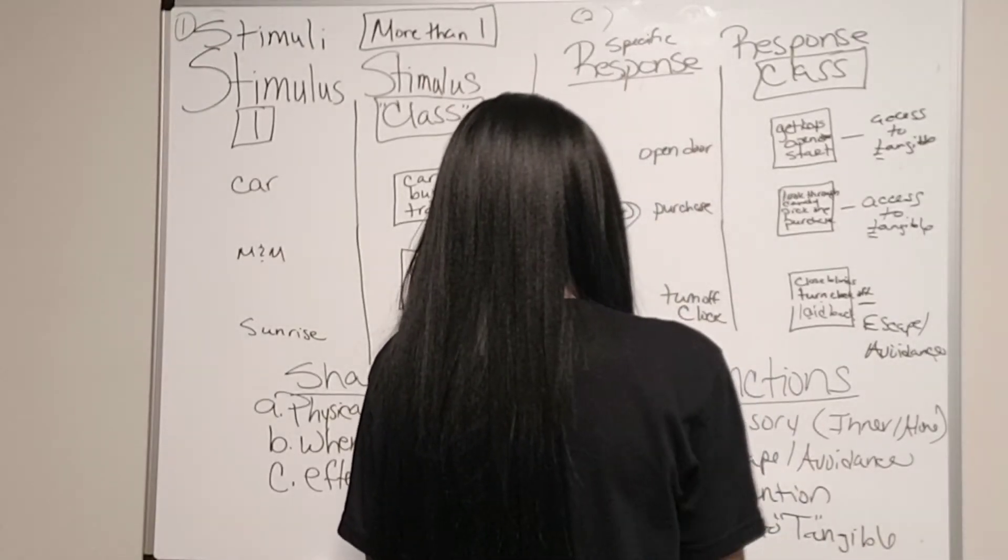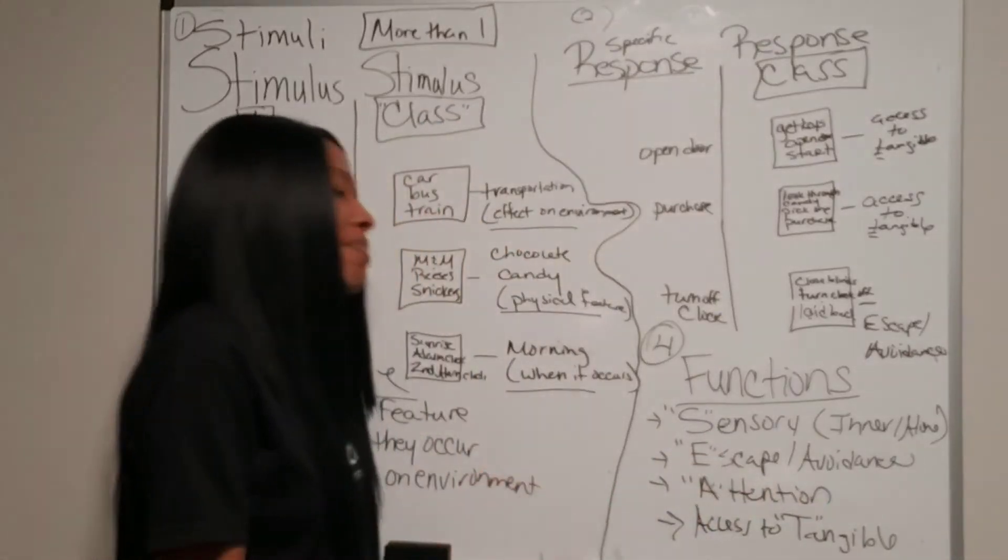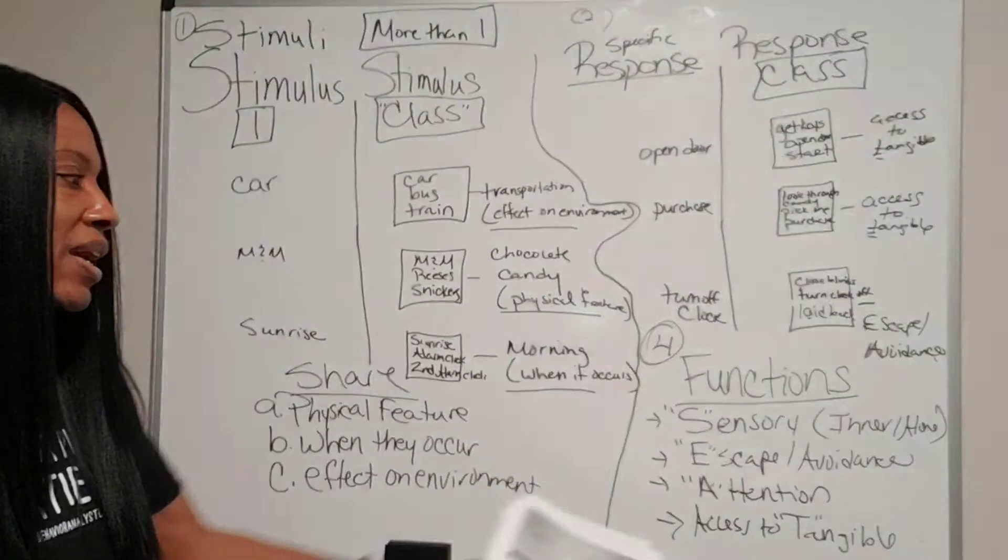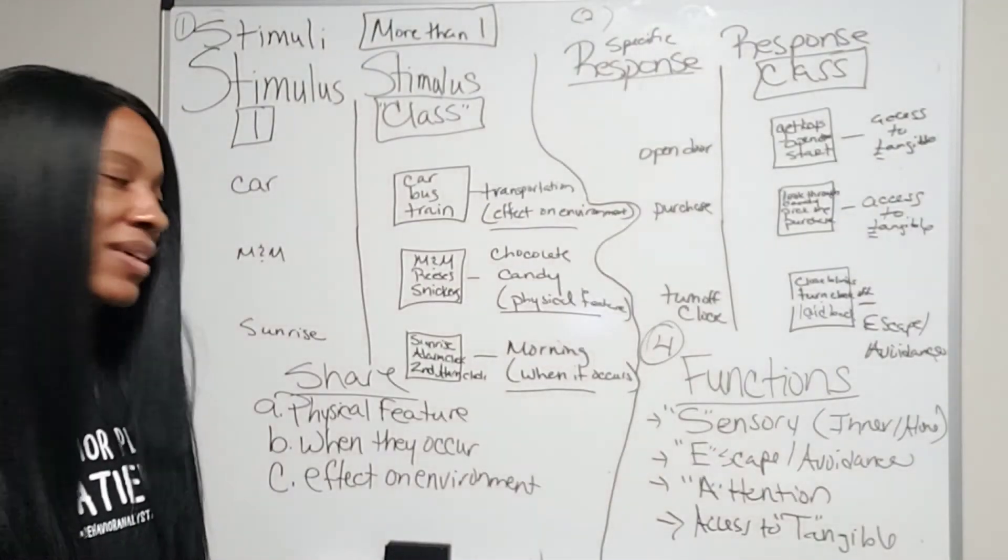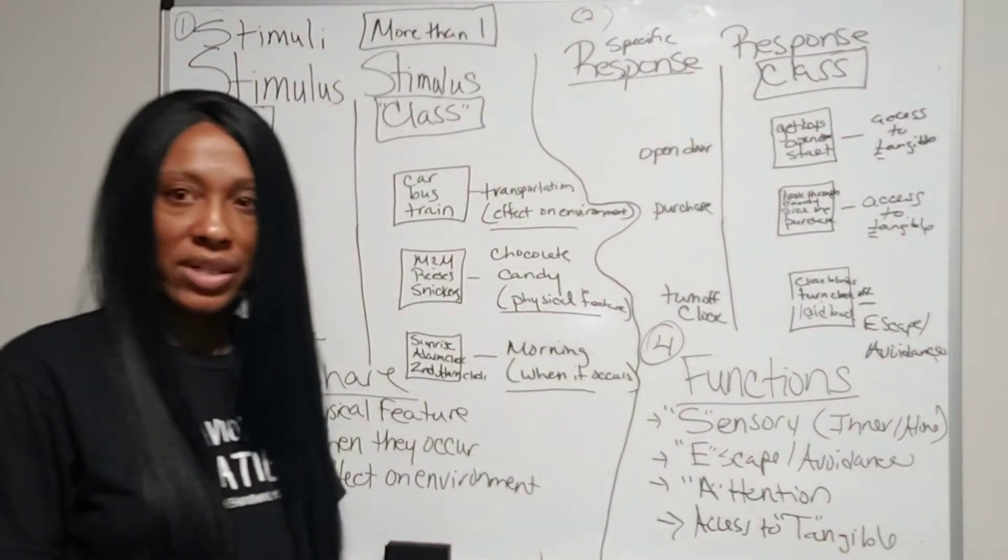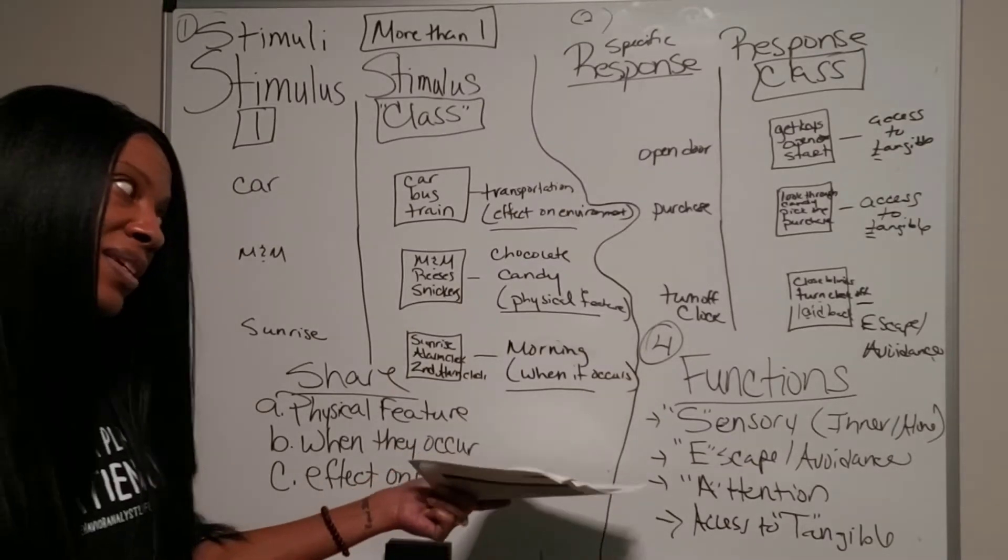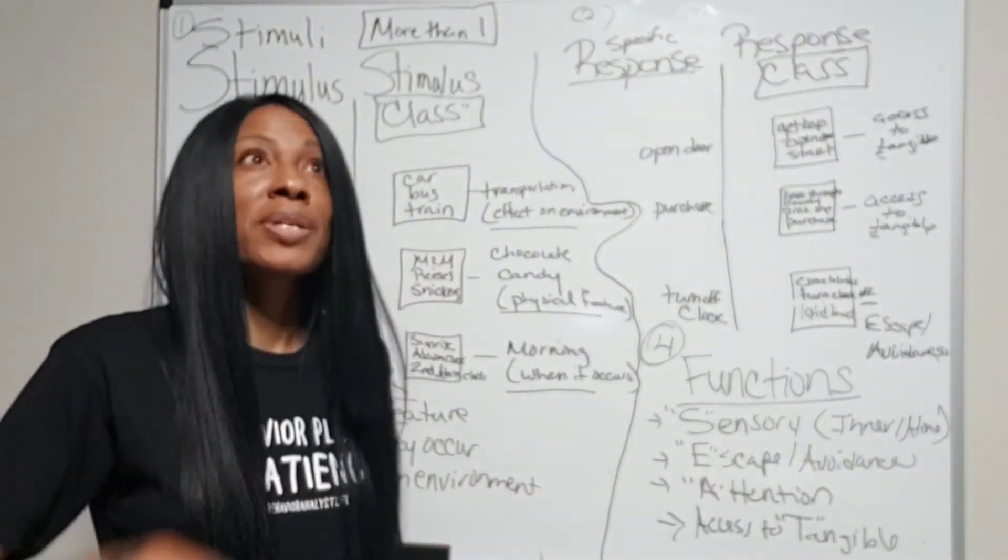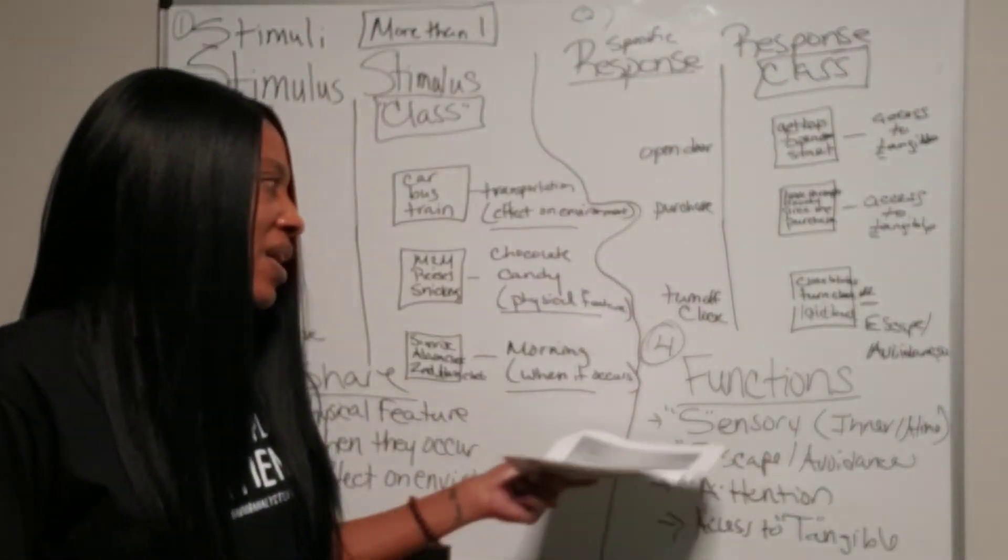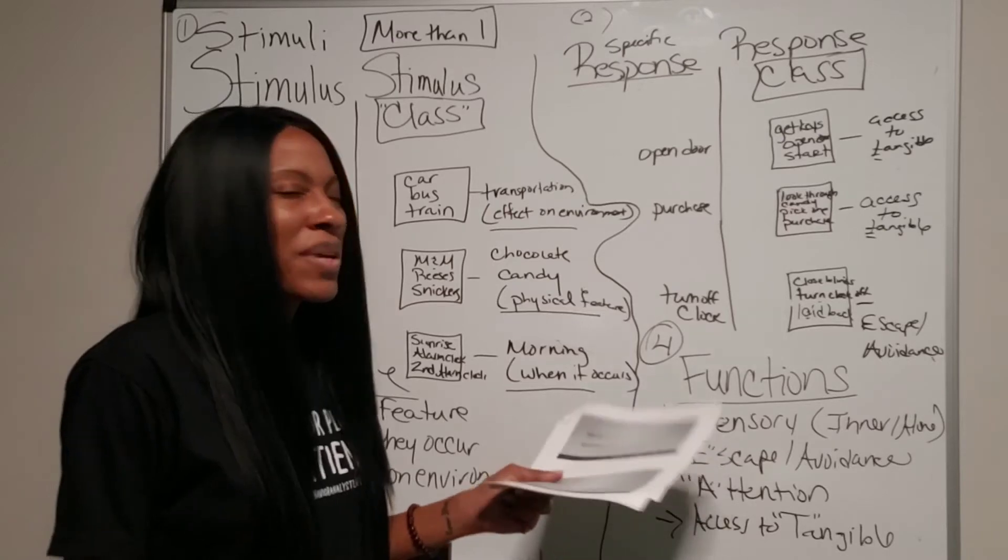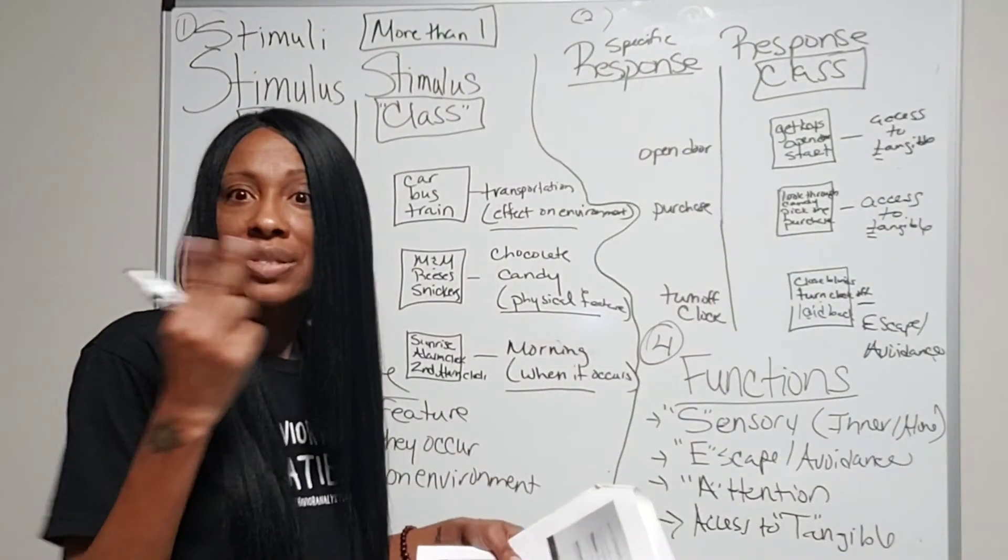These are the four main functions. You definitely will know these. We'll revisit them again later. But you want to know sensory, escape avoidance, attention, and access to tangibles. We go to work so that we can access our paycheck. We call our friends because we want to speak with them and get attention from them. We may avoid calling some friends because we don't want to have to deal with their problems or they're long-winded.